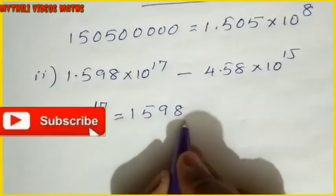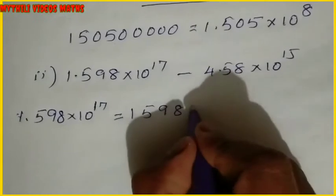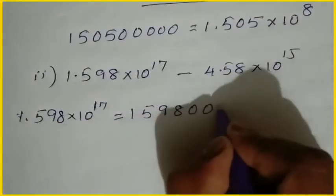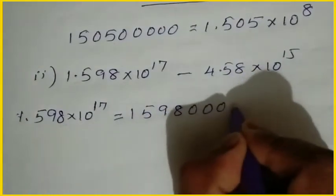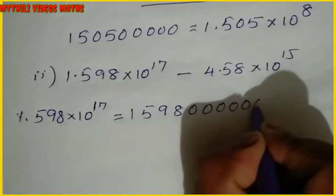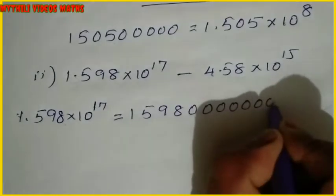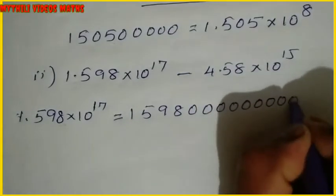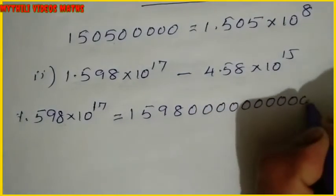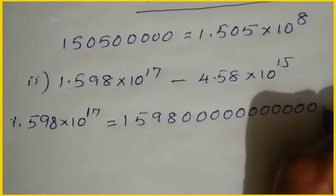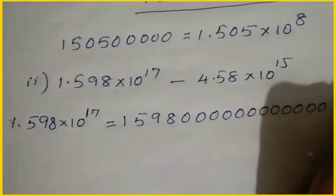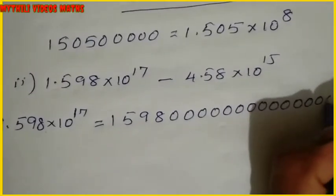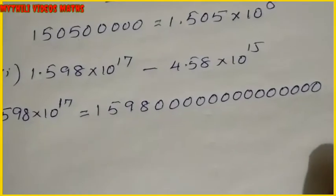We have 3 digits — 5, 9, 8 — and then continue counting positions 4 through 17, placing zeros. So we have 17 digits total after the leading digit. After expanding both numbers in decimal form, we now have to subtract.